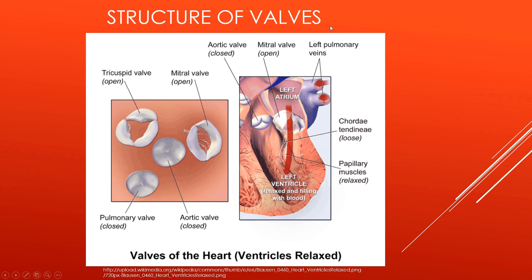Now I'm going to talk about the structure of the valves. You have the tricuspid and mitral valves, also known as the AV valves, and then you have the pulmonary and aortic valves. The valve composition is very different between these two groups. The AV valves are leaflets, whereas the pulmonary and aortic valves are very fibrous caps — much stronger. The leaflets require chordae tendineae and papillary muscles in order to close.